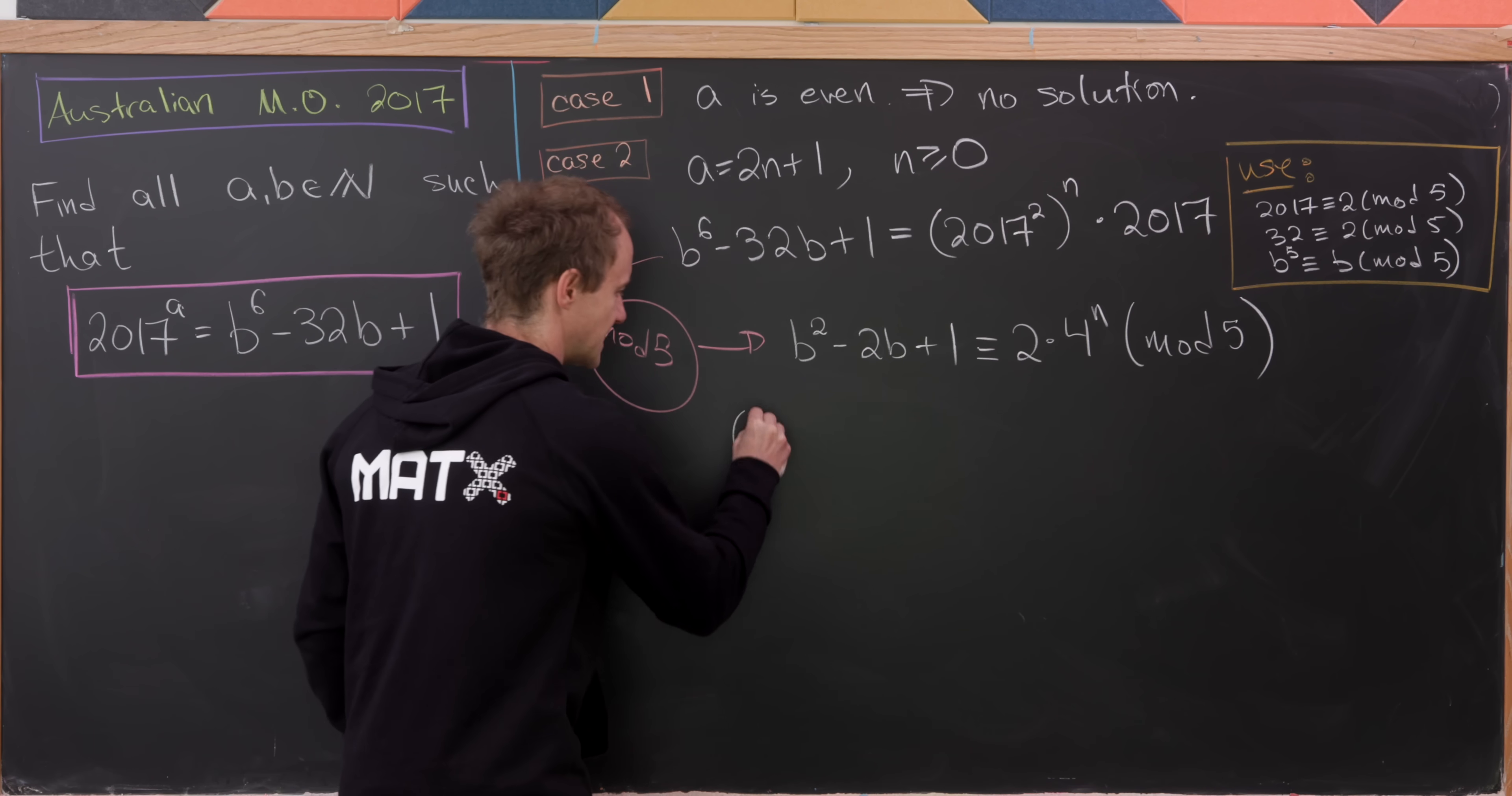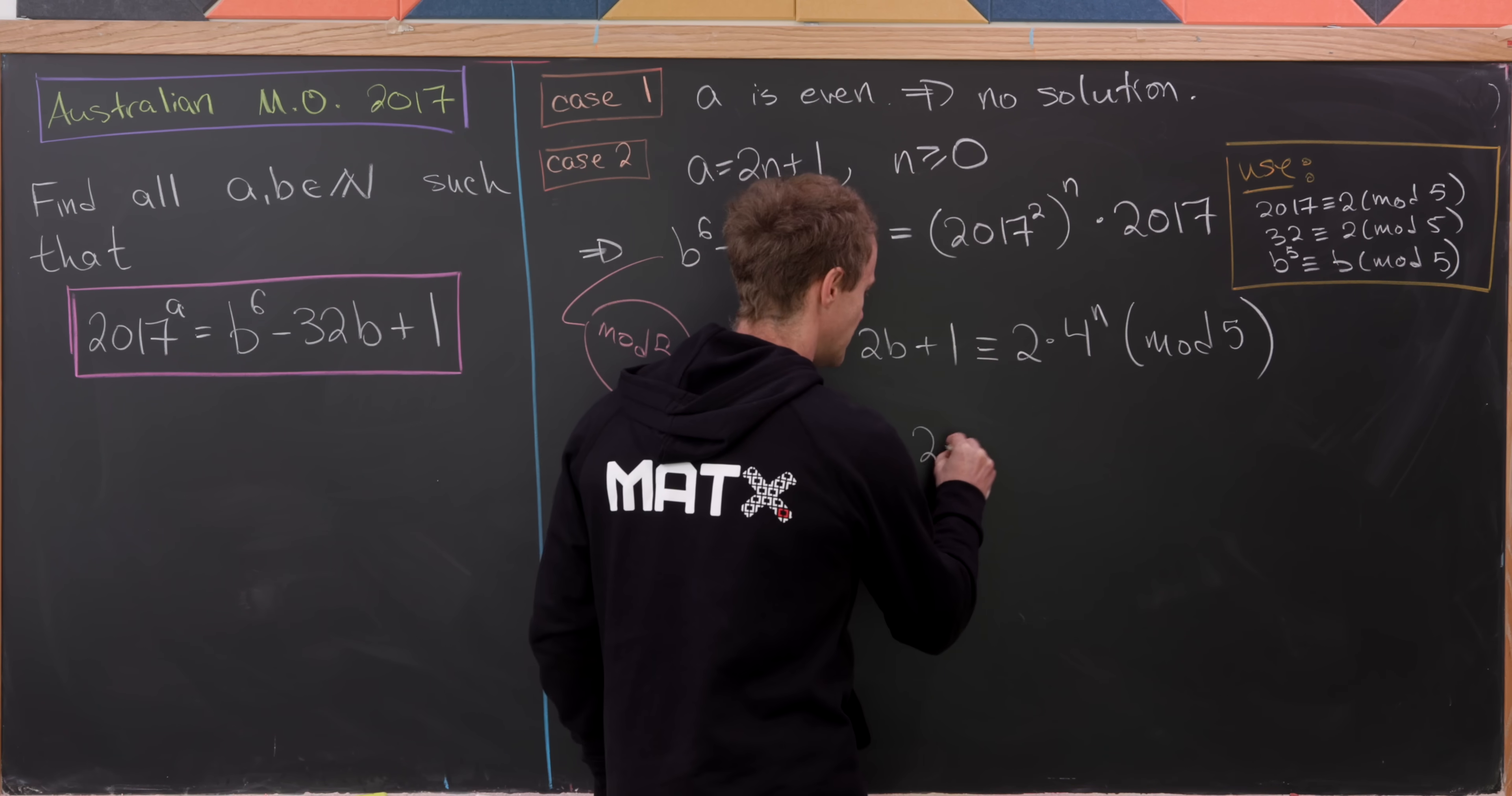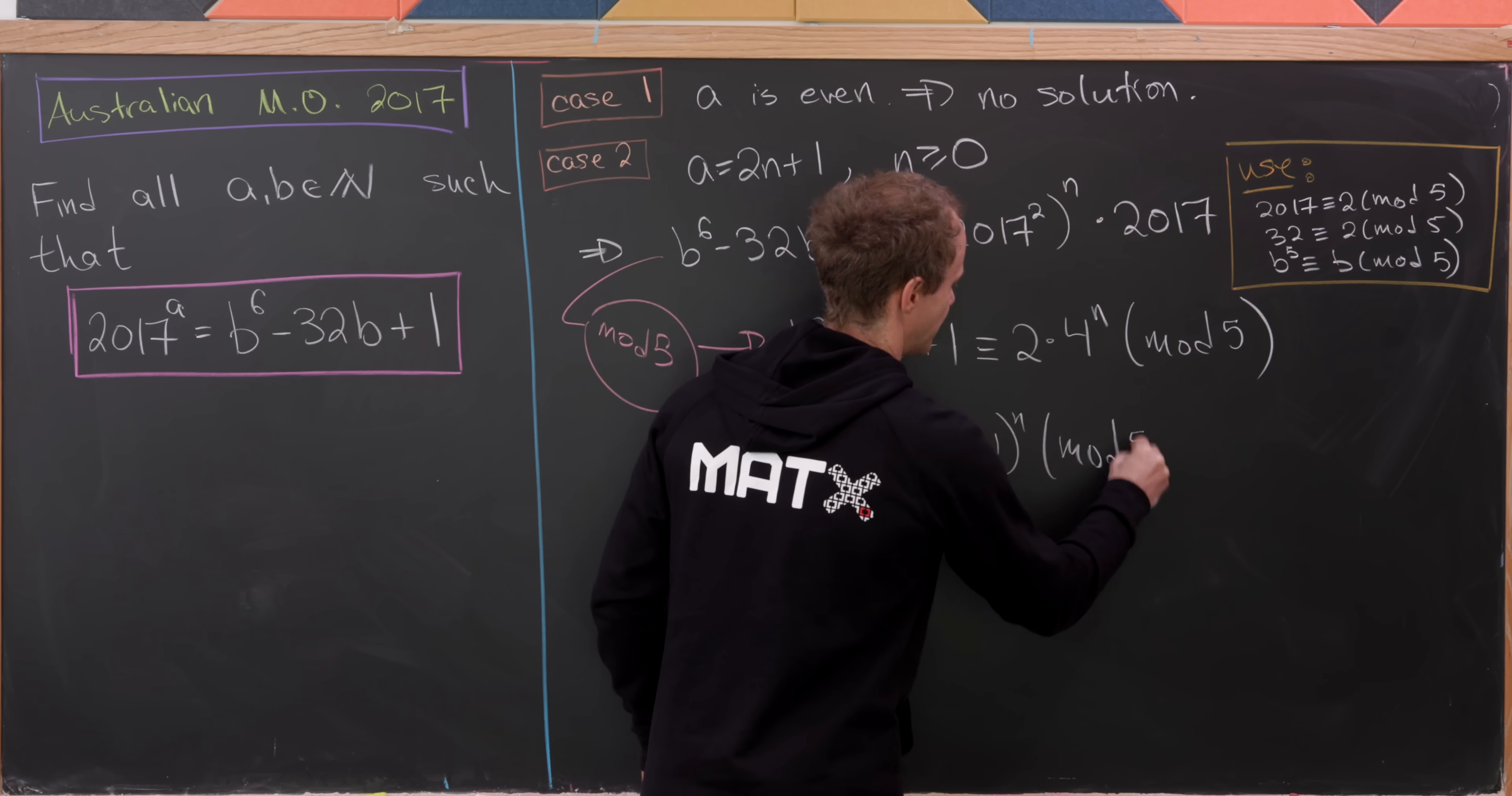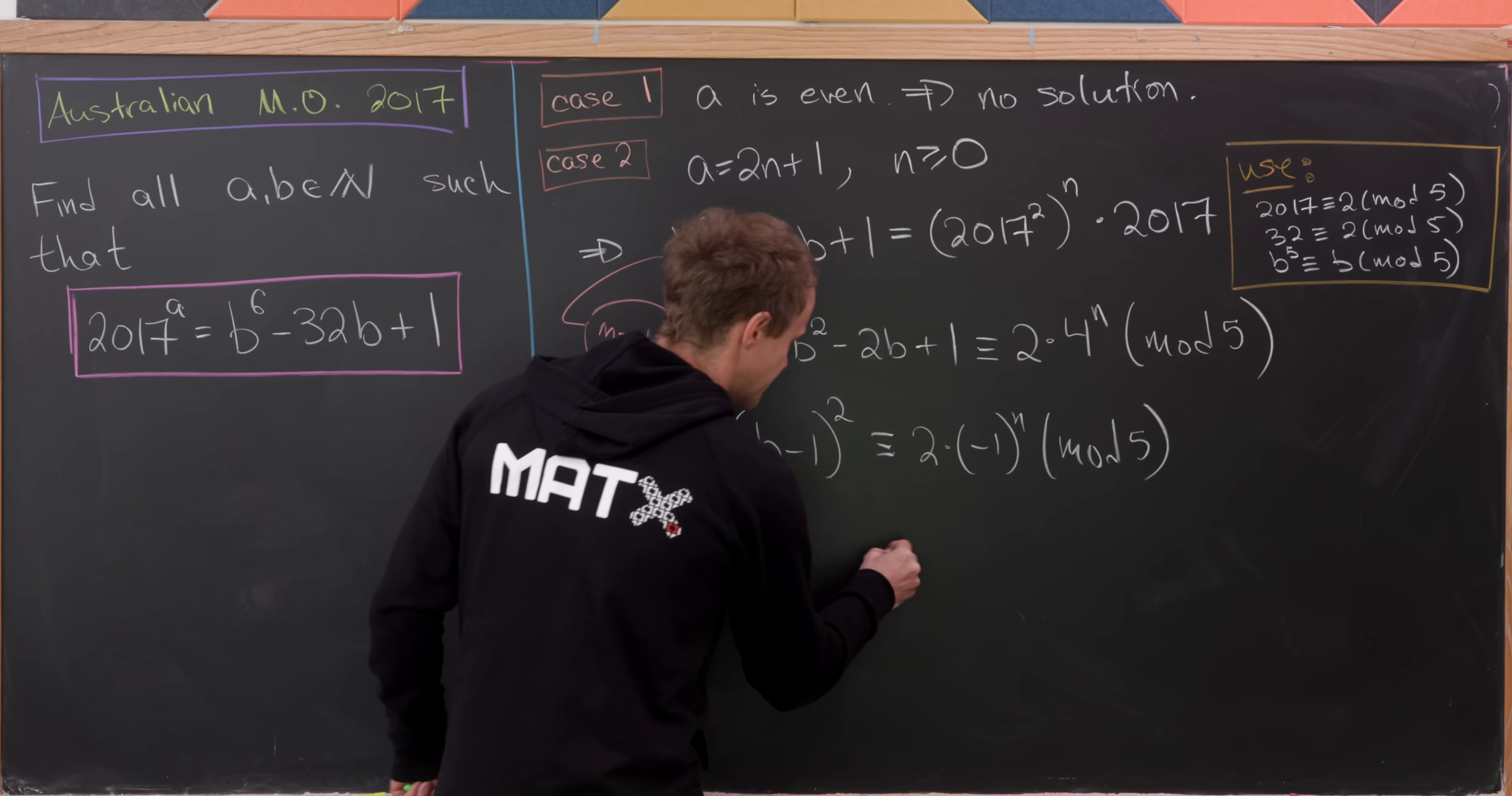But now let's observe that this left-hand side can be factored. And in fact, it factors as (B - 1)^2. And then the right-hand side can be written as 2 times (-1)^n mod 5. That's, of course, because 4 is equal to negative 1 mod 5. And now let's break those into cases.